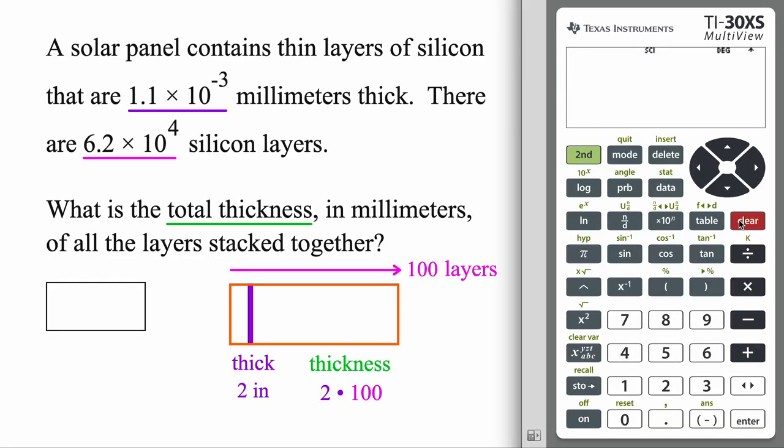Okay, once again, let's clear. Let's actually switch the mode back to normal. Let's go down and enter. Then second and quit. Okay, so let's start off with our thickness for one layer of silicon. That's 1.1 times 10 to the power negative 3. But you know what to do. We got to get out of there, hit the right arrow. Then we're going to multiply by how many layers we have. So times that pink number here, okay, 6.2 times 10 to the power 4. And drum roll, we get 68.2. That is the total thickness in millimeters for the solar panel here.